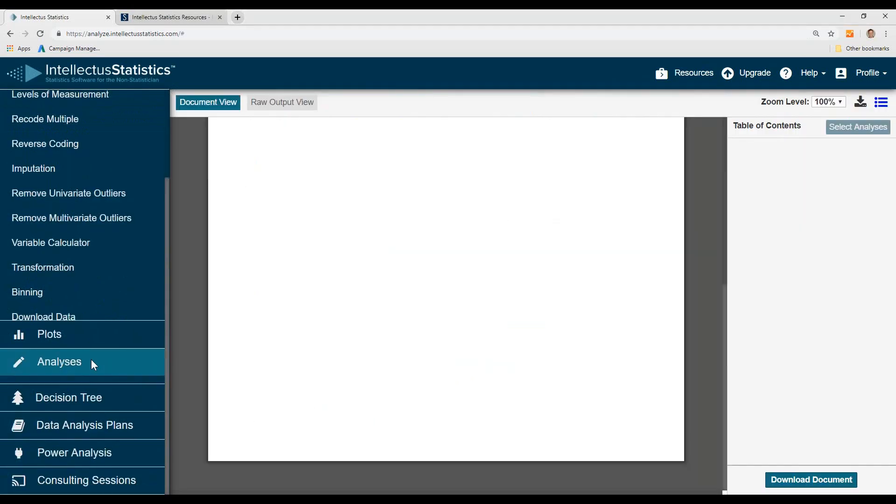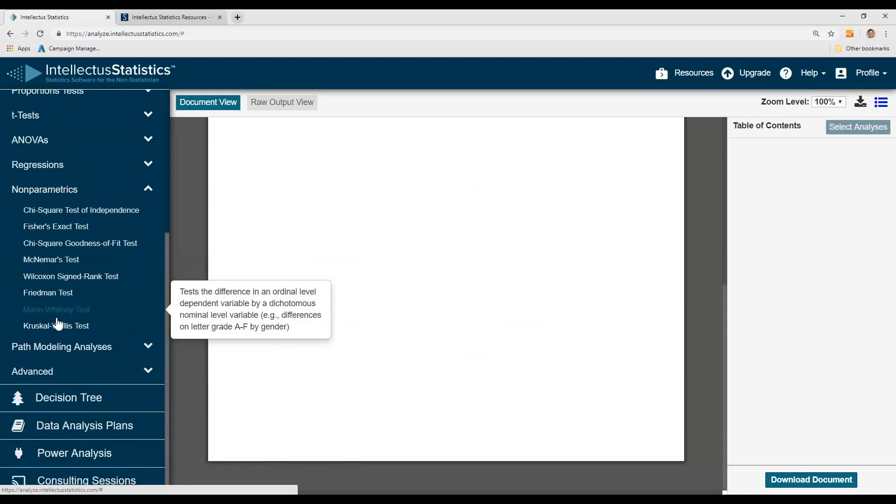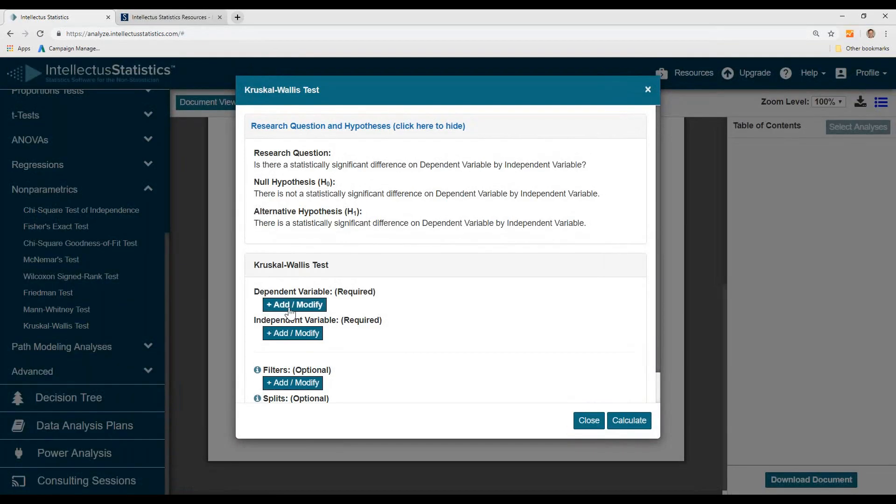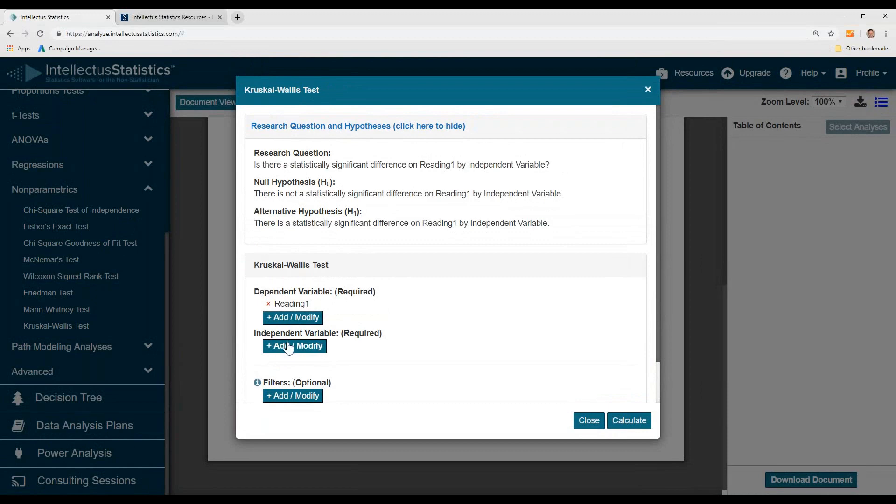Once you have your data in, go to Analyses, then go to Nonparametrics. Go ahead to the Kruskal-Wallis, scoot down a little bit here, and we'll see if there are differences in our Reading 1 scores by our favorite color.